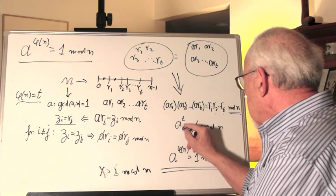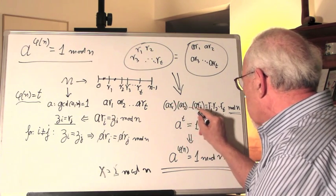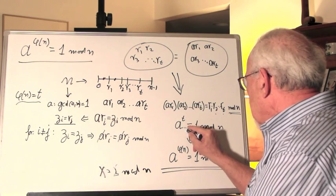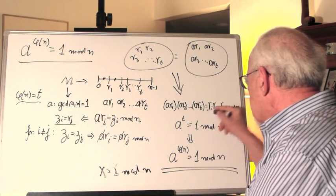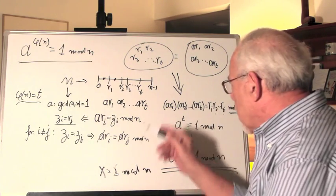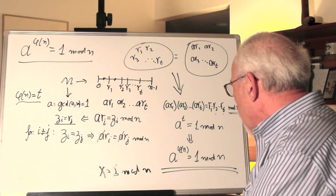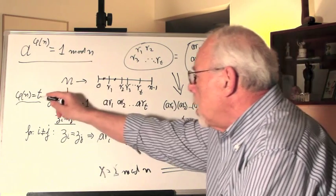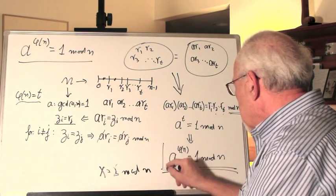Or rewriting it, a to the power of what? t equals 1 mod n, because the r's, they cancel out. And what's t? t is phi of n. That's it.